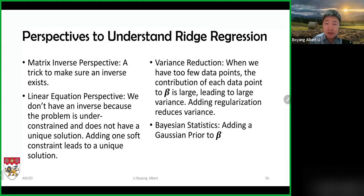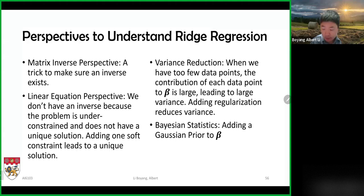The fourth perspective is Bayesian statistics: adding a Gaussian prior to beta that pushes it toward zero. These are all different ways to look at ridge regression.